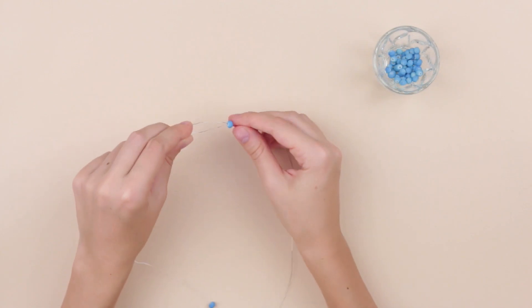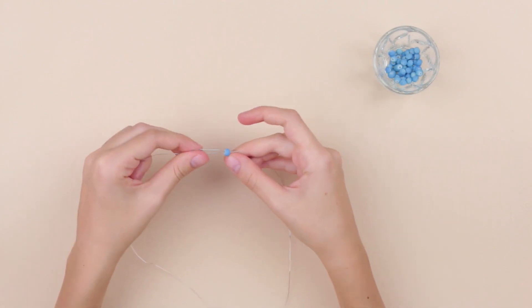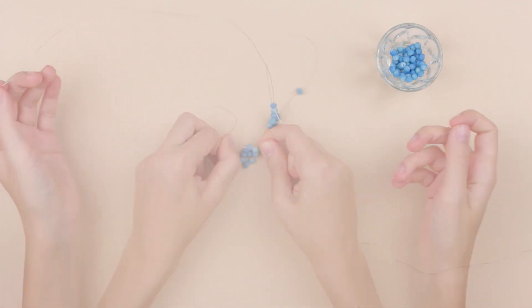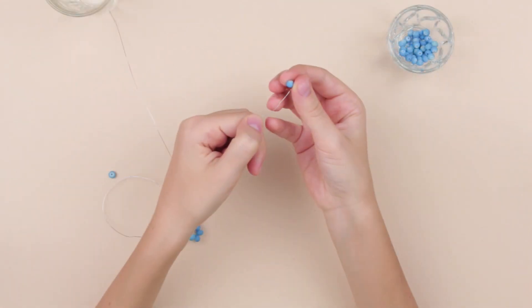Take a bead again. Pull the wire in from both sides and pull up. Continue this way.